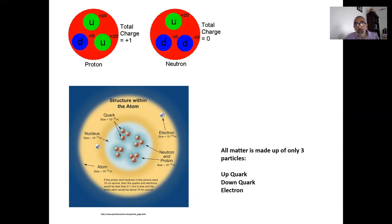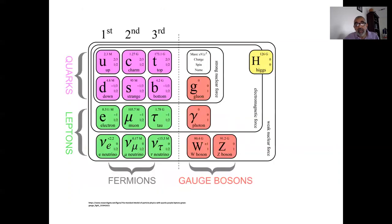So it seems sort of simple then. However, it turns out that as particle physicists were investigating particles in high-energy colliders, they found an awful lot of different particles, and things were more complex than this picture. Further work on their part gave us what is known as the Standard Model of particle physics.